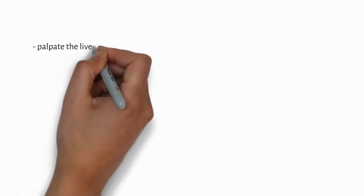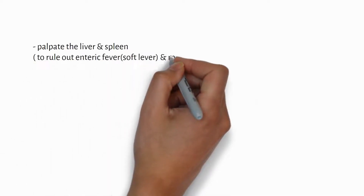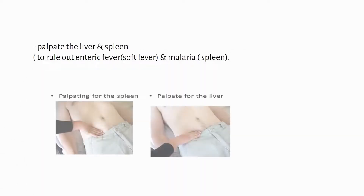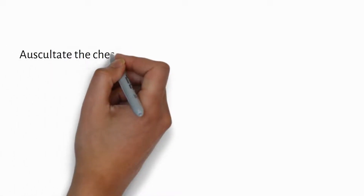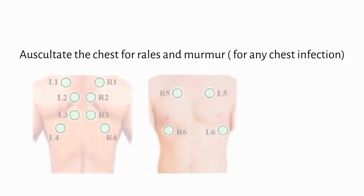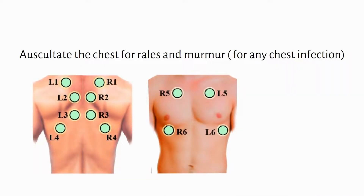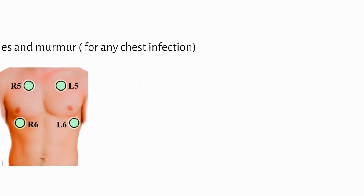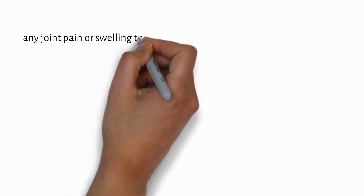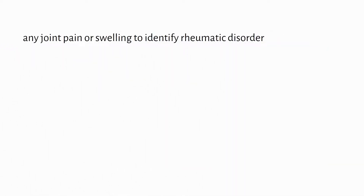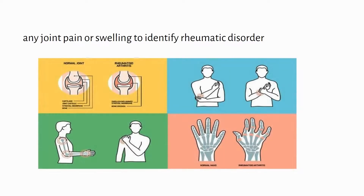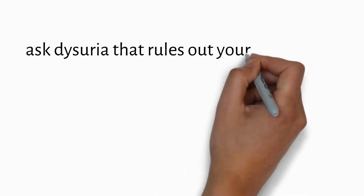Next, lie down the patient and palpate the liver and spleen to rule out enteric fever — if a soft liver is found — and malaria. Ask for any joint pain or swelling to identify rheumatic disorder, and if present, carefully check for murmurs and tachycardia. Also ask for dysuria to rule out urinary tract infection.